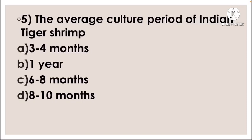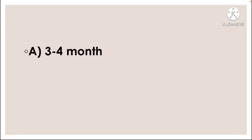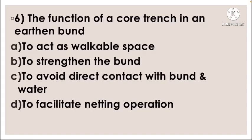— option A three to four months, option B one year, option C six to eight months, option D eight to ten months. The average culture period of Indian tiger shrimp: correct answer option A, three to four months.